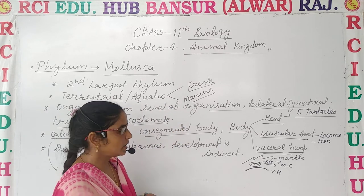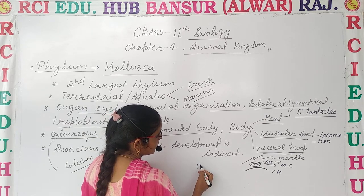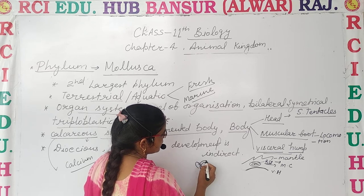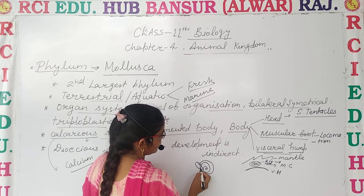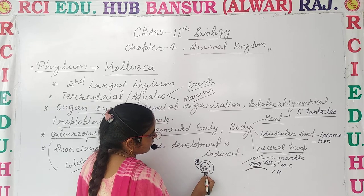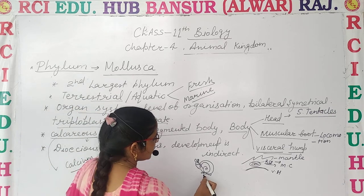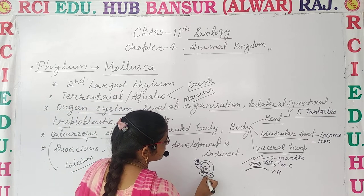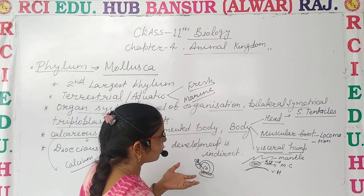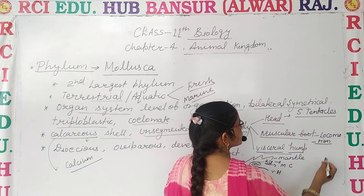For example, if we talk about a snail — you must have generally seen a snail. It belongs to this category, Mollusca. The muscular foot is at the front. The main function of the muscular foot is locomotion. It is a simple thing — the name is foot, so what is its function? Locomotion only.